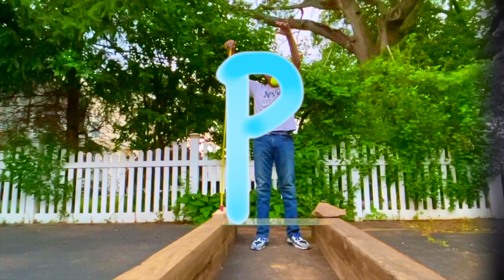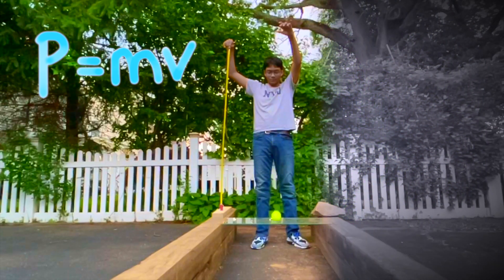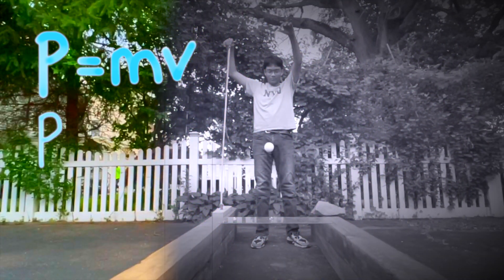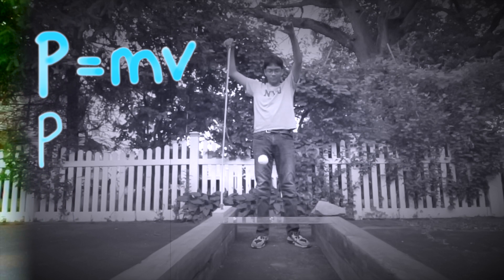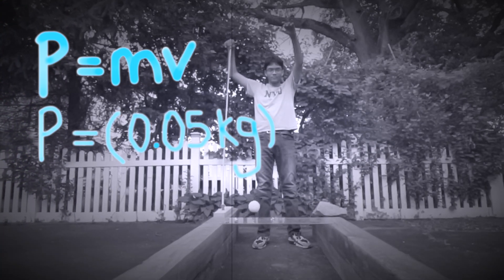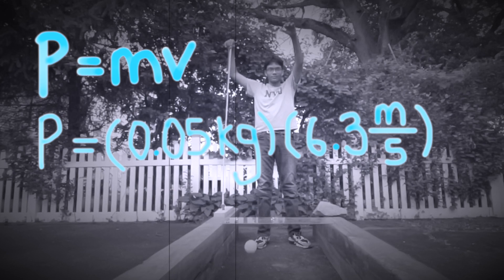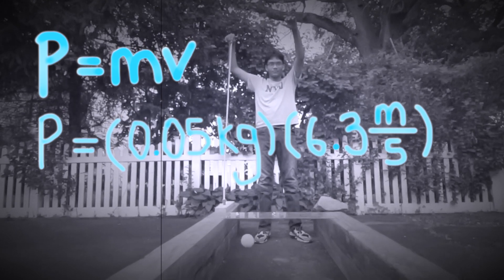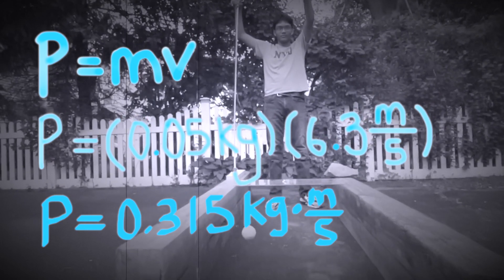Now let's find the momentum of the falling tennis ball. P = MV, where M is the mass and V is the velocity. M is 0.05 kilograms—let's plug that in. V is 6.3 meters per second. And so our momentum is 0.315 kilograms times meters per second.